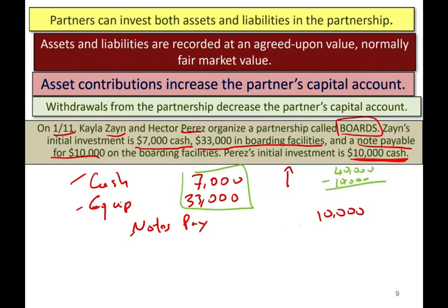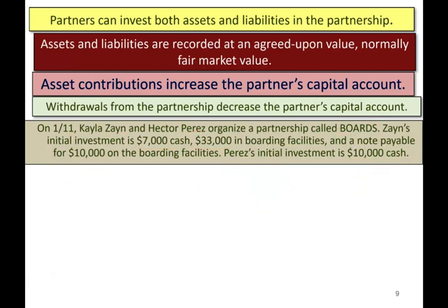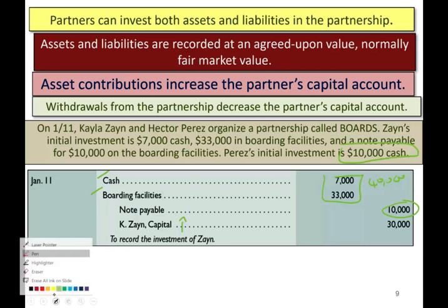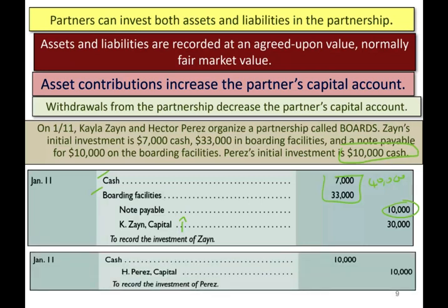When you transfer a liability, it's as if someone gave you the money for that liability. So Zane contributed $30,000 net to their capital account. The journal entry shows: debit cash, debit boarding facilities or equipment — totaling $40,000 in assets — credit notes payable $10,000, and credit Zane capital $30,000. For Perez, it's straightforward: debit cash $10,000, credit Perez capital $10,000.